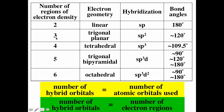Three regions of electron density give trigonal planar electron geometry with bond angles of 120°. Valence bond theory says that happened because you took an S and two Ps to form three SP2 hybrid orbitals 120° from each other. Four regions give tetrahedral geometry with bond angles of about 109.5°, corresponding to SP3 hybridization — one S and three Ps forming four orbitals. Five regions correspond to trigonal bipyramidal geometry with bond angles of 90°, 120°, and 180°, giving SP3D hybridization.